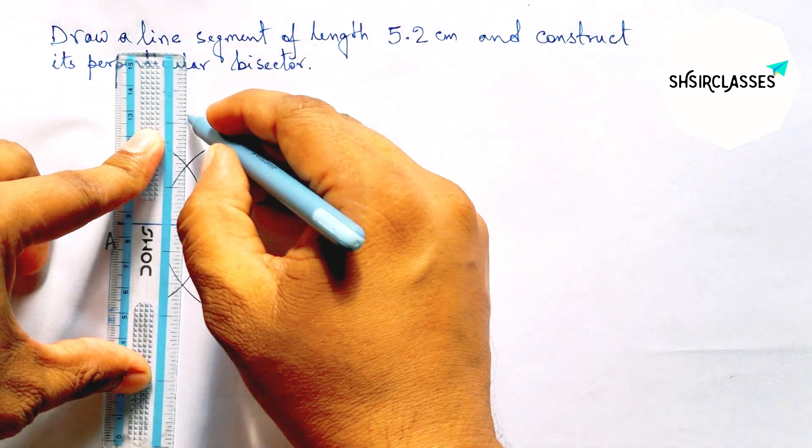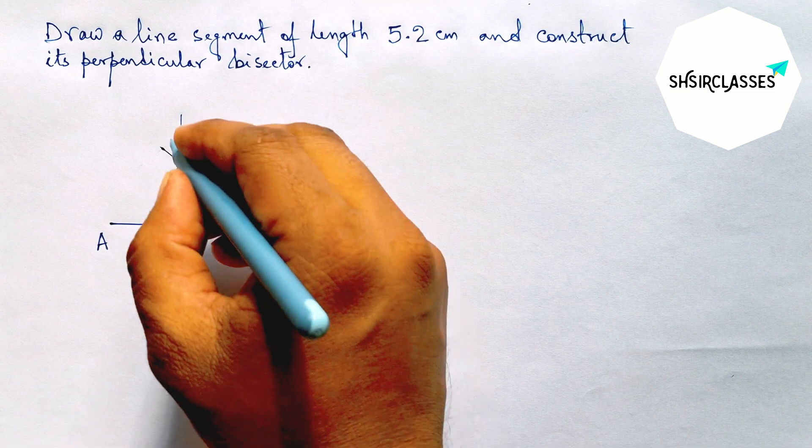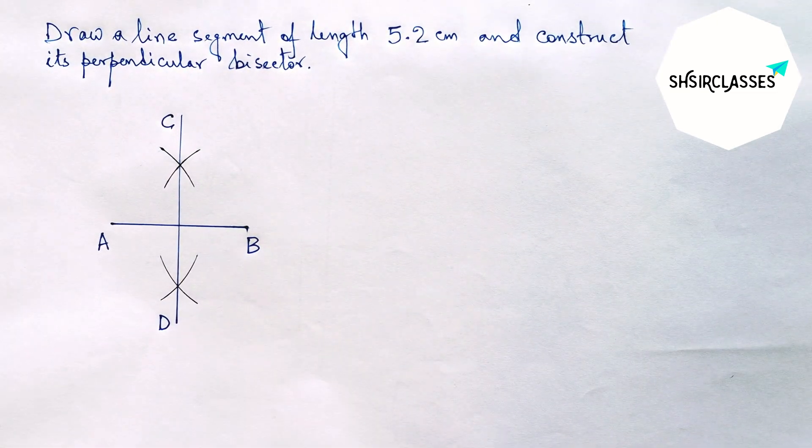Now joining this, and this is the required perpendicular bisector. So labeling here C and D.